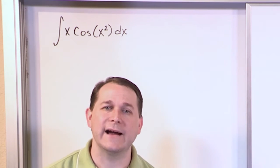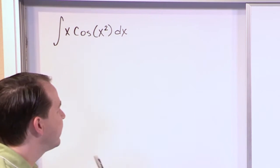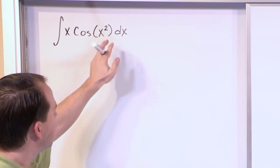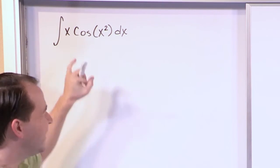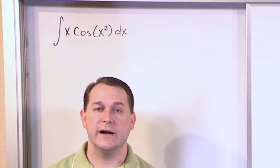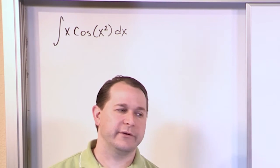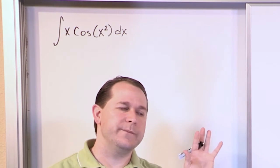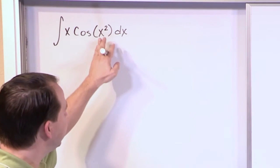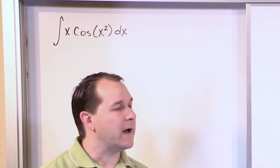I want you to notice something. Notice that inside here we have x squared. Just as a mental exercise, if I take the derivative of x squared, what do I get? I'll get 2 times x, 2x, right? Now notice I have 2x if I were to take the derivative of the inside. Notice I have a single x on the outside.